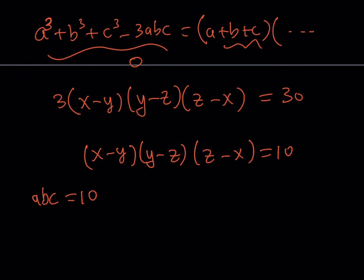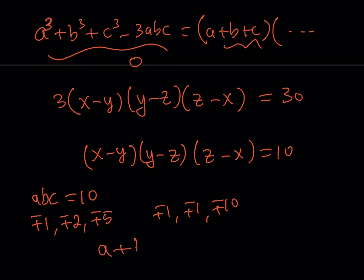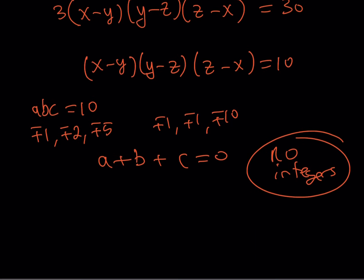The possible factorizations of 10 are: (±1, ±2, ±5) and (±1, ±1, ±10), with appropriate sign combinations. However, these numbers also need to satisfy a + b + c = 0. In any combination, neither grouping adds up to 0, so this equation has no integer solutions.